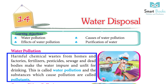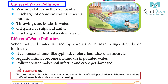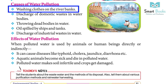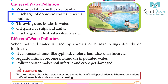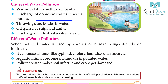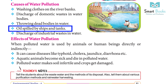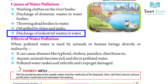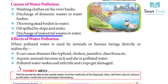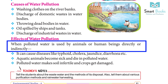The substances which cause pollution are called pollutants. Causes of Water Pollution include: washing clothes on the river banks, discharge of domestic wastes in water bodies, throwing dead bodies in water, oil spilled by ships and tanks, and discharge of industrial wastes in water.